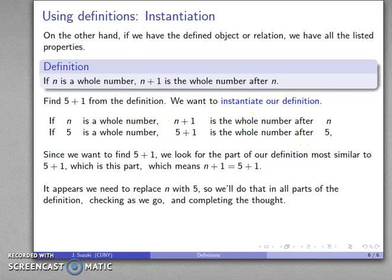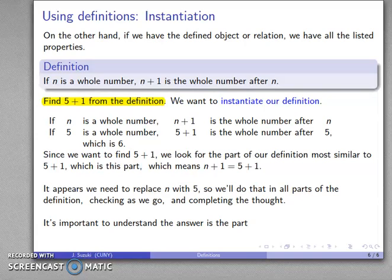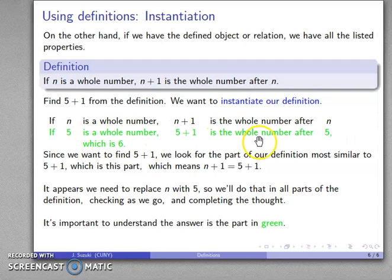That puts us about 90% of the way through the proof, but we really ought to complete the thought. The whole number after 5 is 6. The complete answer to the question 'find 5 plus 1 from the definition' is: if 5 is a whole number, 5 plus 1 is the whole number after 5, which is 6. This is the only acceptable, complete answer to the question.